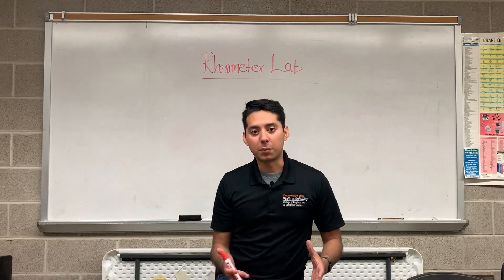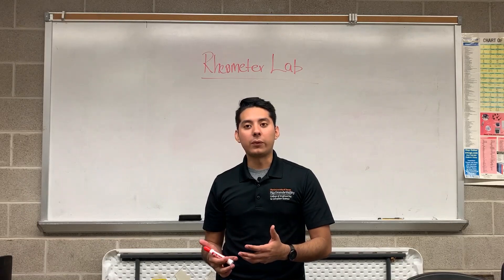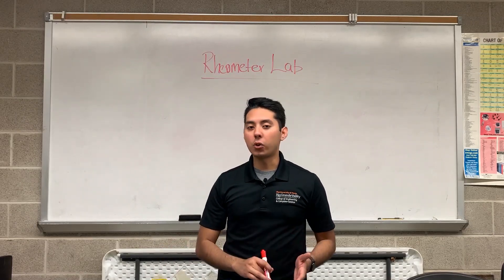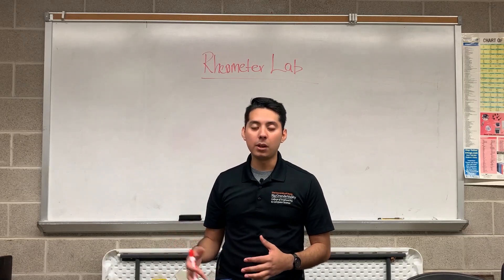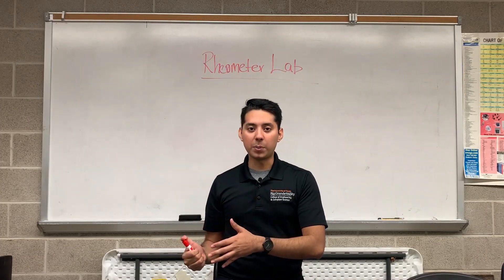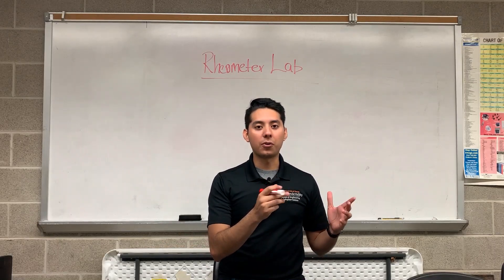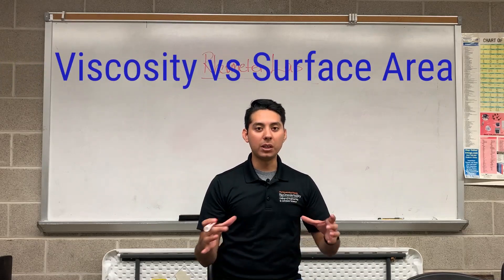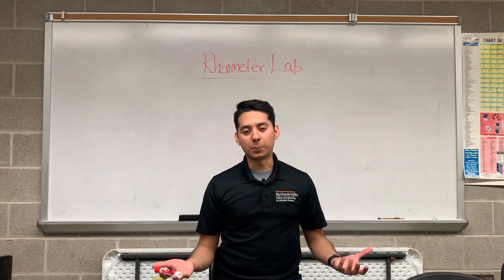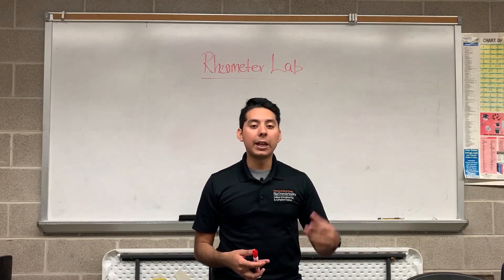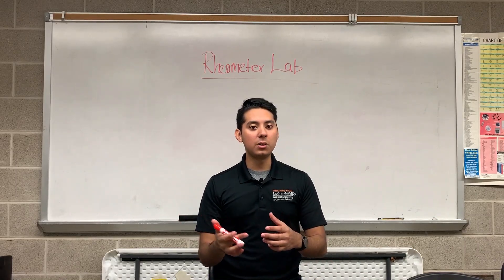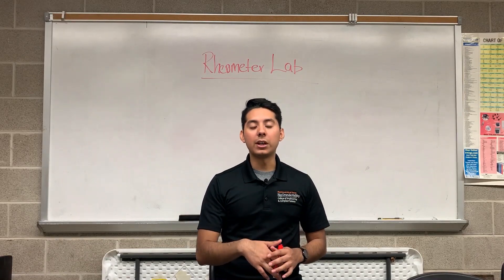This lab is divided into four different experiments. The first experiment looks at the effects of time on viscosity — whether viscosity increases, decreases, or remains constant over time. The second part examines how shear rate or RPM affects viscosity. The third part tests how the surface area of a spindle affects viscosity. The fourth experiment looks at how temperature affects viscosity — will it increase or decrease?